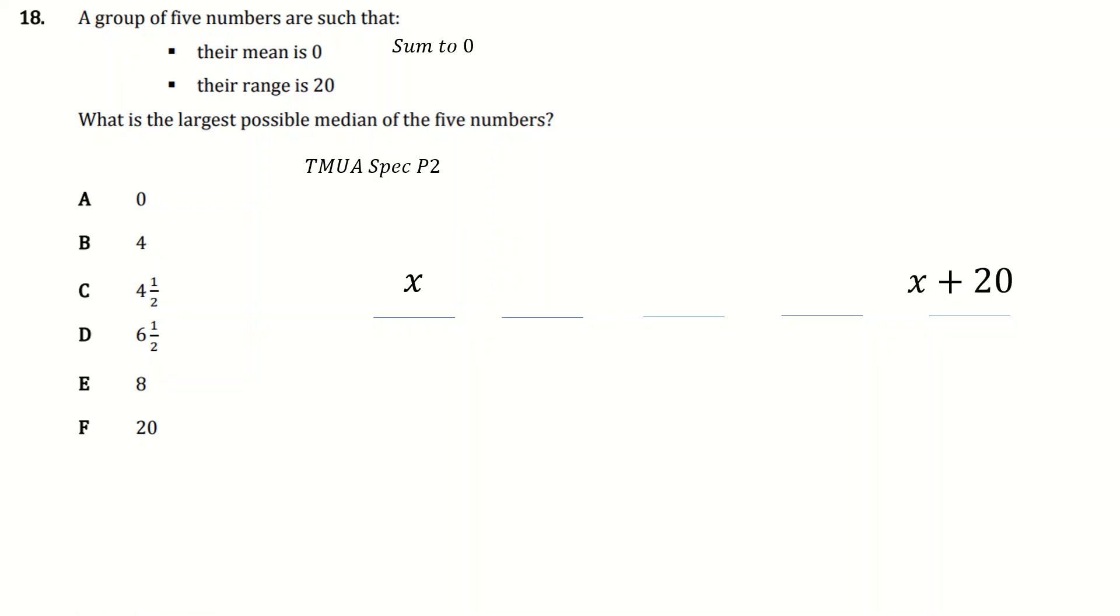Their range is 20, so if I call the smallest number x, the largest number must be x plus 20. Now, I want the largest possible median. Now, the way to get the median as large as possible is to just make all three of these numbers the same. Just make this x plus 20 and this x plus 20 as well. Because I can't make the median bigger than this, so the largest I can make it is make it the same as this, which of course involves making this one the same as well.